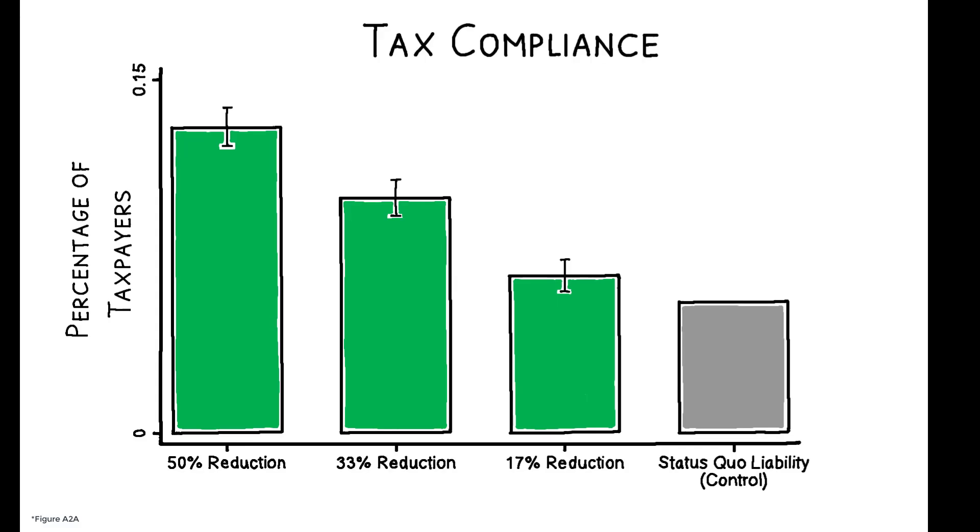And the results show that lower rates substantially increased tax compliance. Only 5.6% of the control group paid their property tax, while compliance was 6.7%, 10%, and 13% for those who received reductions.